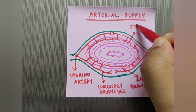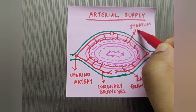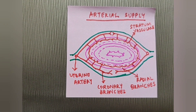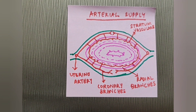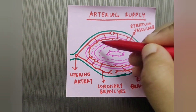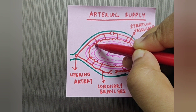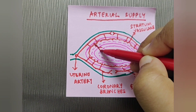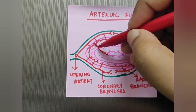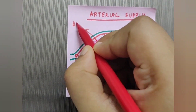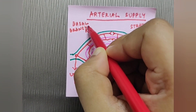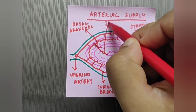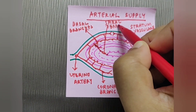The radial branches form the stratum vasculare in the myometrium, with basal branches at the base. The spiral arteries are present in the functional layer of the endometrium.